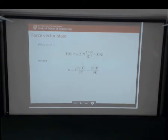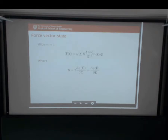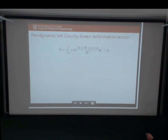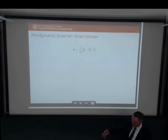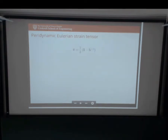Now I can use this and solve it in the peridynamic momentum equation. I also have a left Cauchy-Green deformation tensor - I can prove it's exactly the left Cauchy-Green deformation tensor. I can define Eulerian strain measures. Now with a notion of this finger tensor and the right Cauchy-Green deformation tensor, now I can do push forward and pull back operations. That's going to be apparent in a moment.